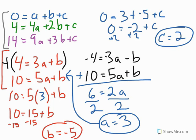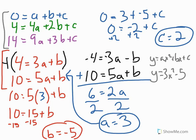Now I have all three unknowns: a equals 3, b equals negative 5, and c equals 2. Plugging into the standard form y equals ax squared plus bx plus c, we get y equals 3x squared minus 5x plus 2. That is our final equation — the polynomial equation for the data given at the start of the video. I hope this explanation helped you understand how to find the equation of polynomials using the finite differences method and systems of equations when given a table of data.